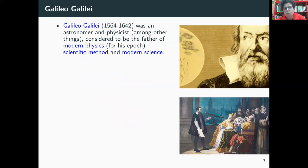Here comes Galileo Galilei. Galileo Galilei was an astronomer and physicist, among other things. He was also an engineer, which was very important because he could construct relatively good telescopes which were very important for observation. He's considered to be the father of modern physics for his epoch - I'm referring to the idea of modern physics for his time and the scientific method. You can have many theories, but the theory has to make predictions, and those predictions have to corroborate the observation if the theory is correct. He is also considered the father of modern science.